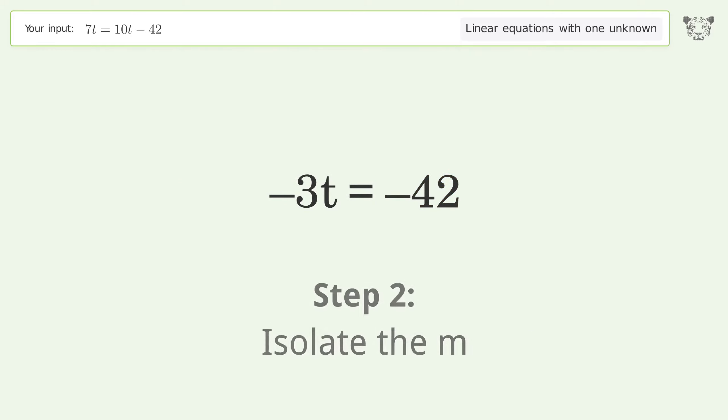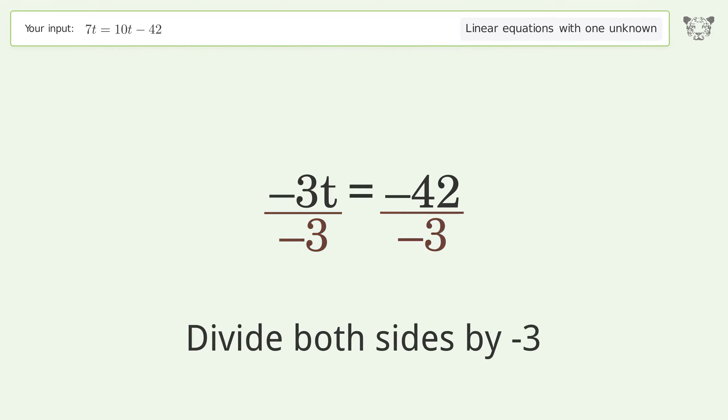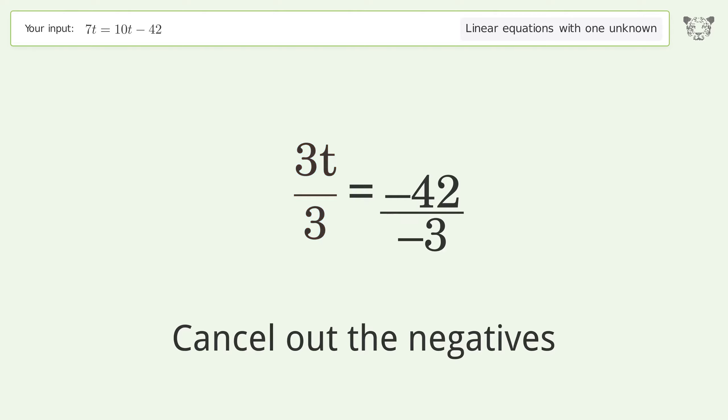Isolate the variable. Divide both sides by negative 3. Cancel out the negatives and simplify the fraction.